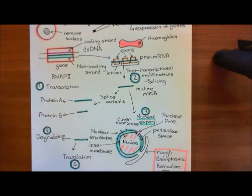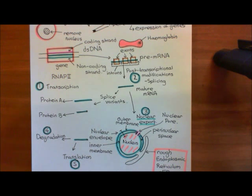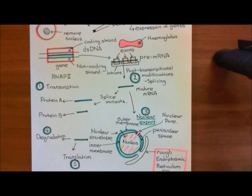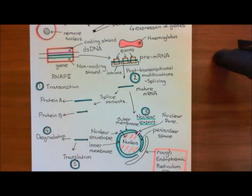We've discussed how important this is in determining cell specialization, because all cells have the same DNA. So what actually determines how different certain cell types are from each other? Well, it's epigenetic changes rather than genetic changes.